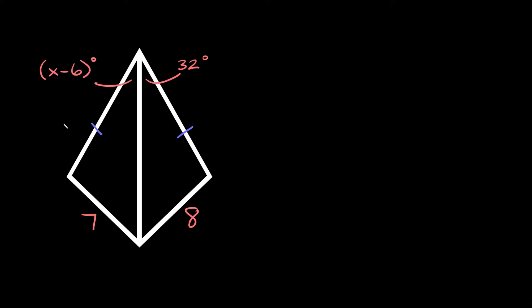To use the hinge theorem you need two congruent sides and the angle between those two congruent sides. Here you can see it already gives us that we have this side which is congruent to this side, but we need one more side. You can see that the side in the middle is a side that they have in common, so since they share this common side we can basically say it's congruent to itself.